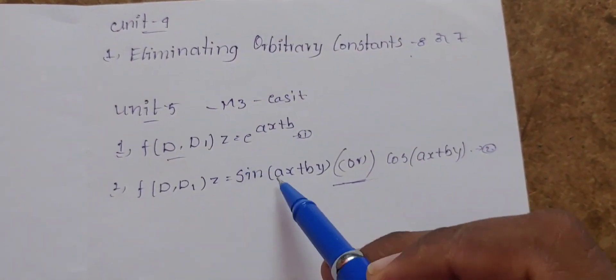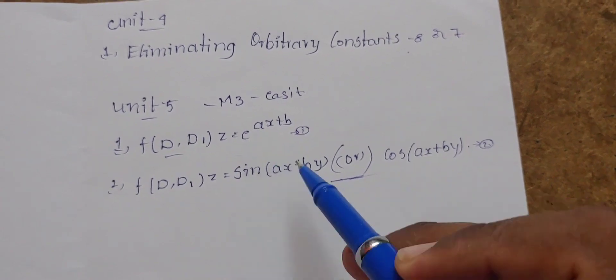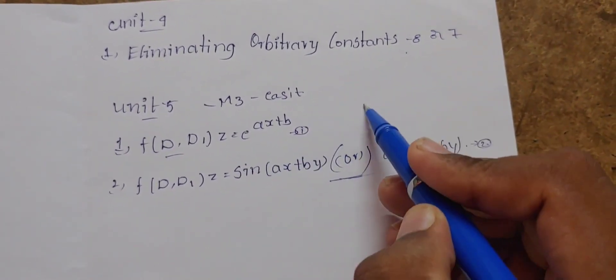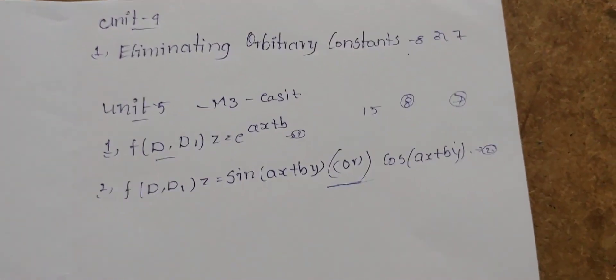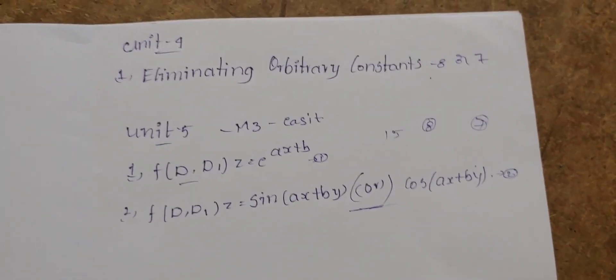This is after f of d, the functions compulsory is compulsory. If you want to see the two of them, you can use 15 marks if you want to use. You can use 15 marks. These two to prepare.